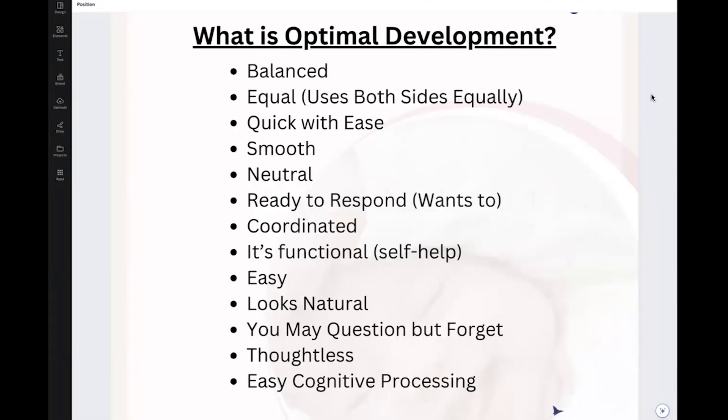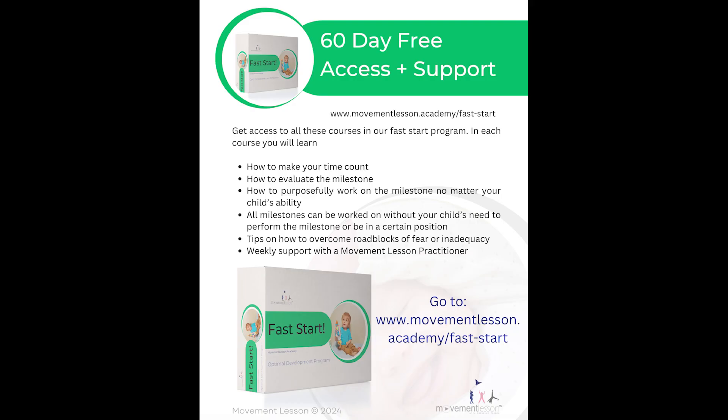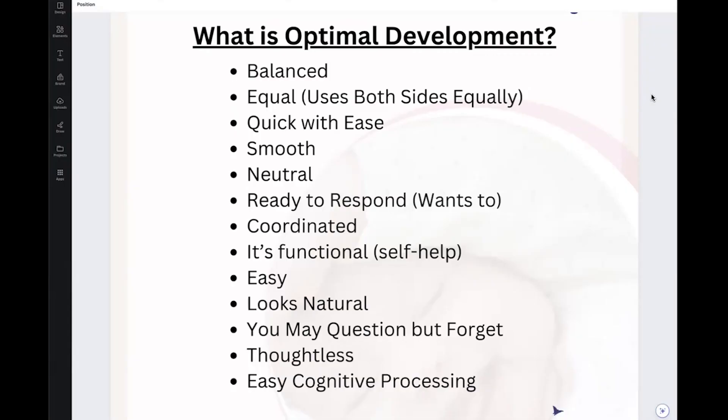And at the same time, as you come and you learn ways to have clinic success at home through our support program, the Fast Start Support Program, you still question like, what am I looking for, even as I do a movement lesson? I found that it's important for you to understand the difference between optimal and non-optimal development, and it will really help you gain more confidence in what you're doing at home and give you more of an idea of what you're looking for.